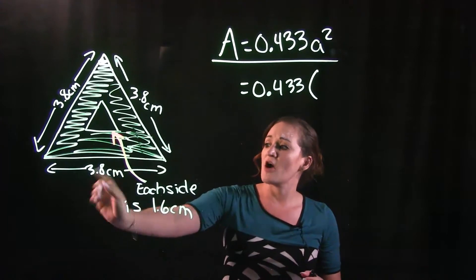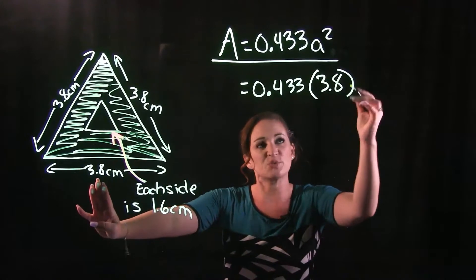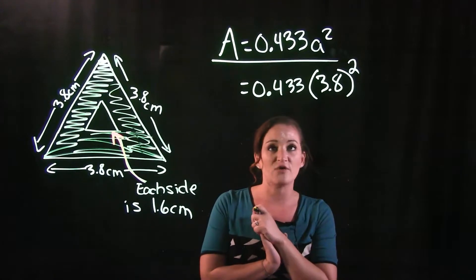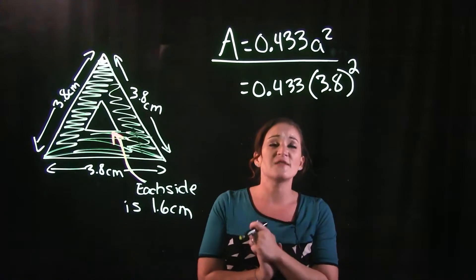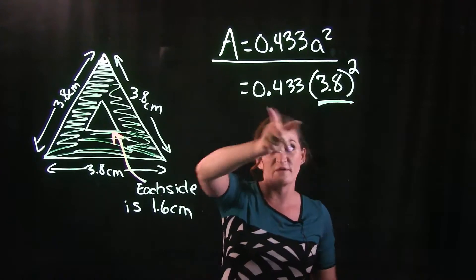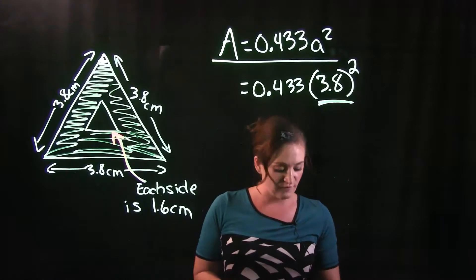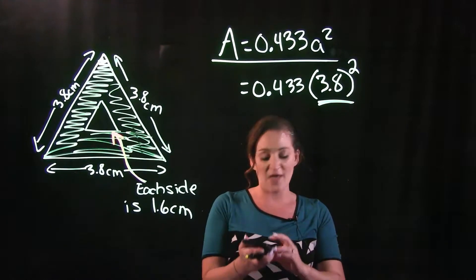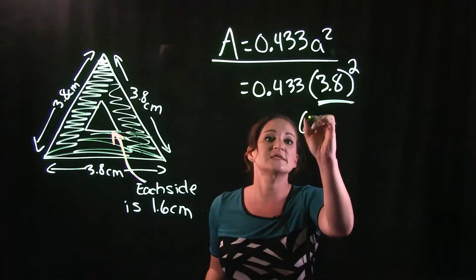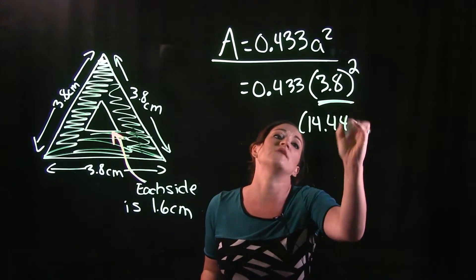So our a, our side of our triangle for our big triangle here is 3.8, and we need to make sure that we do not forget to square that. Simplifying this further, order of operations tells us that we need to work with the exponent first before we multiply it times the 0.433. And if I multiply that out here,